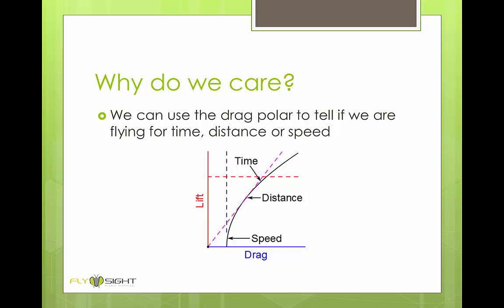You can see when you look at this plot that when we're flying for speed, we're aiming for the lowest possible drag. When we're flying for time, we want the highest possible lift. And when we're flying for distance, we want to be as close as possible to that pink dot, which gives us our optimal glide ratio.